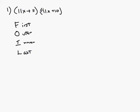So we're going to take the first two terms of each of the binomials and multiply them together. We're going 11x times 11x, which is going to give us 121x squared.